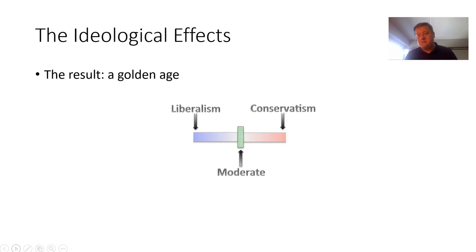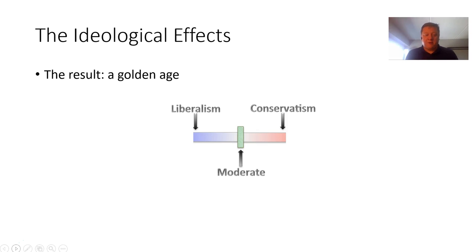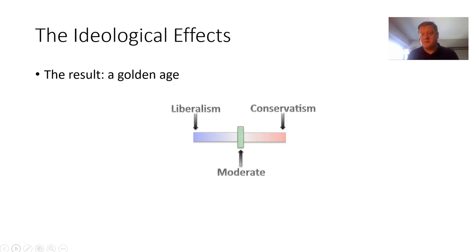This very narrow political range in the US is not going to last. We'll talk in the next couple of weeks about how that's going to start to fall apart — and obviously, looking back from today's perspective, it didn't last. That's what people talk about when they refer back to the Golden Age. But keep in mind, I'm only talking about this Golden Age from a political perspective. This was not a Golden Age from a racial perspective, from a gender perspective, or from a lot of other perspectives.